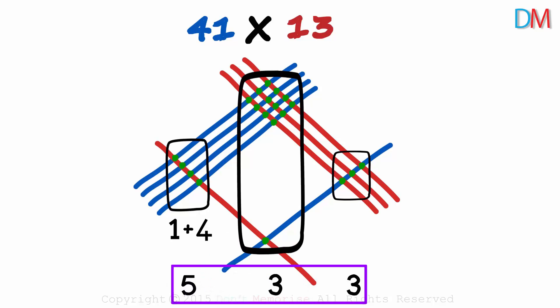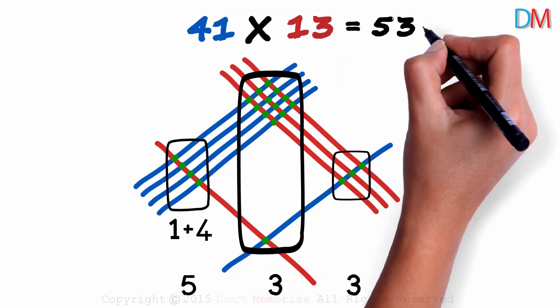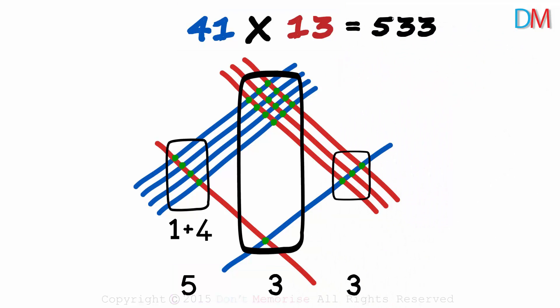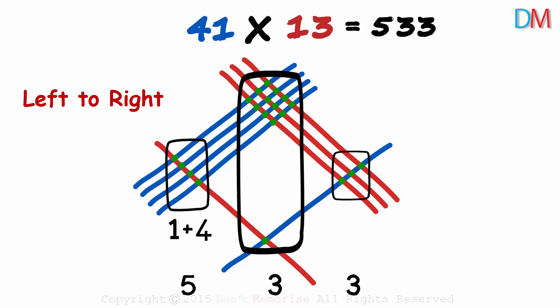That's the answer. 41 times 13 gives us 533. That was so simple. Lines from left to right and count the intersections in each zone.